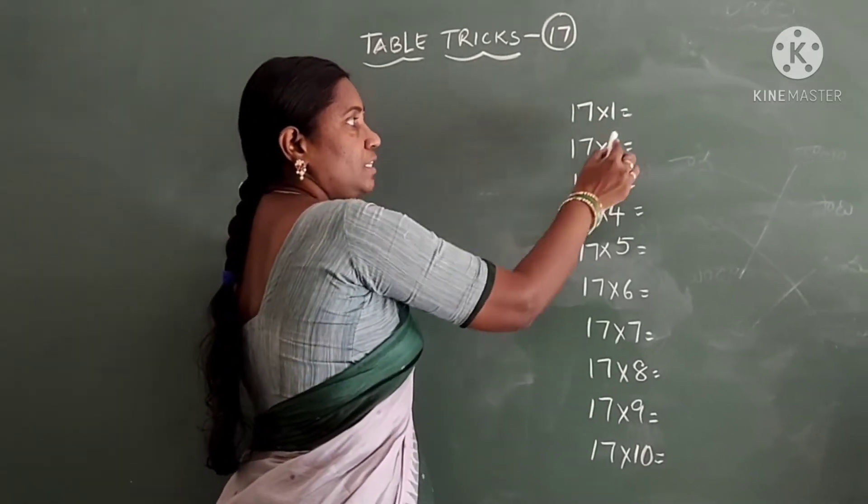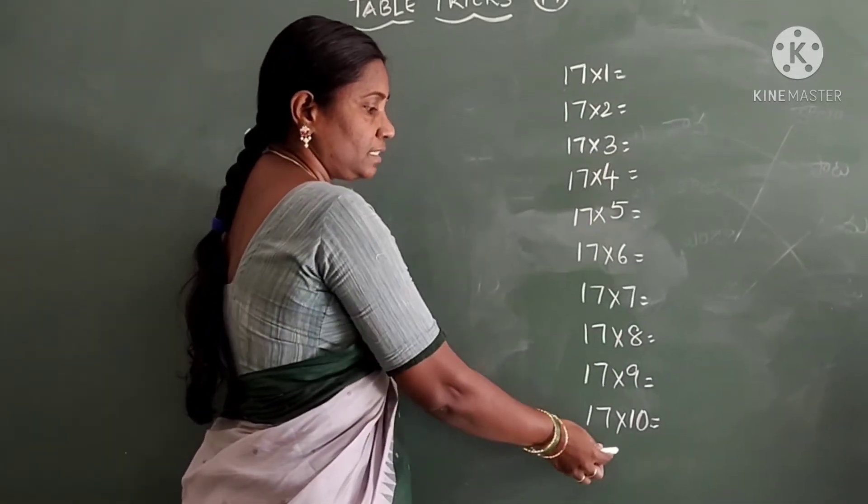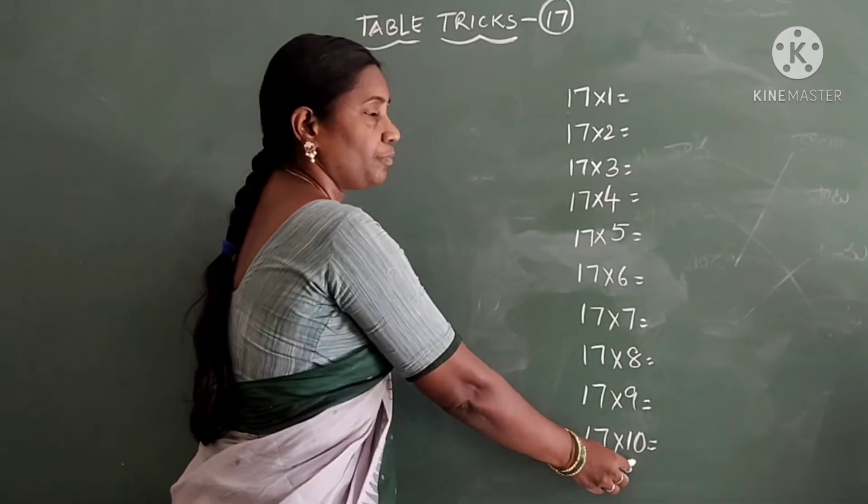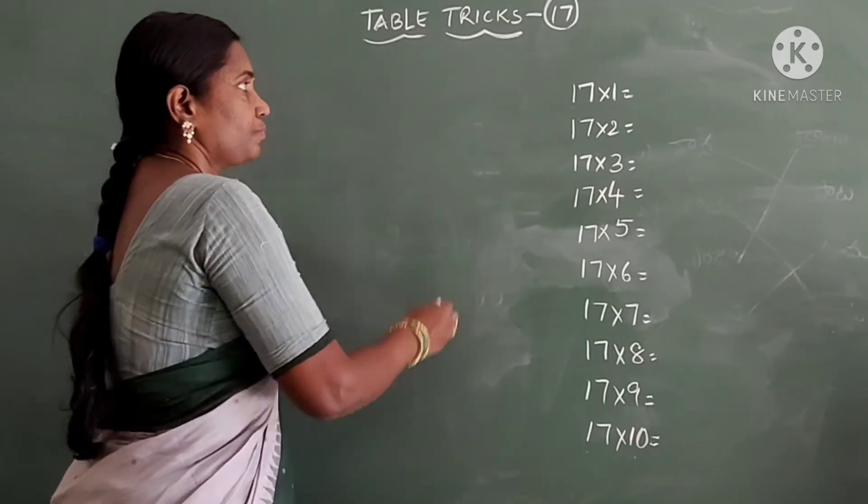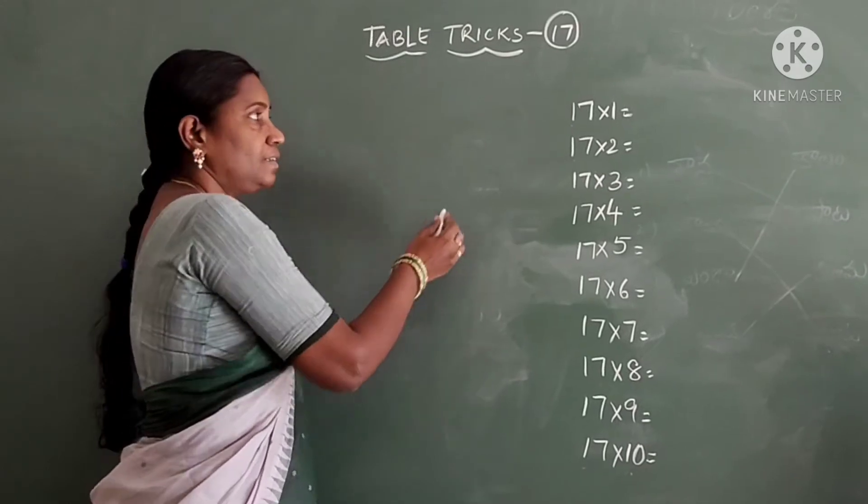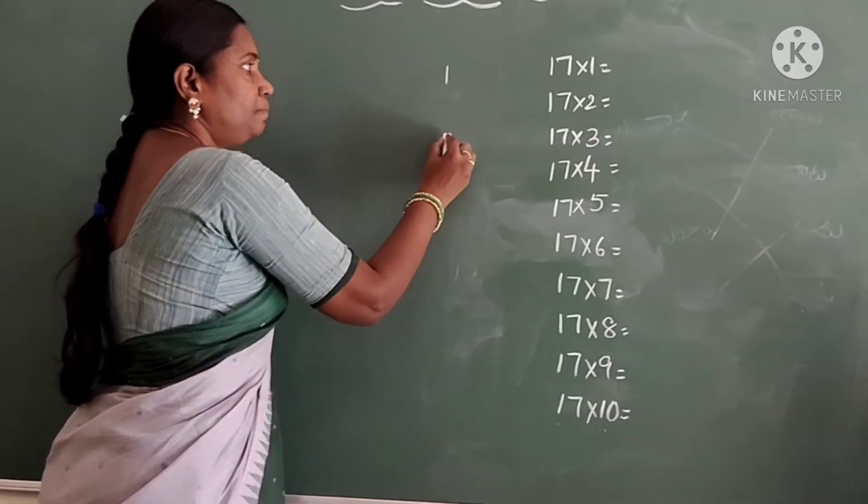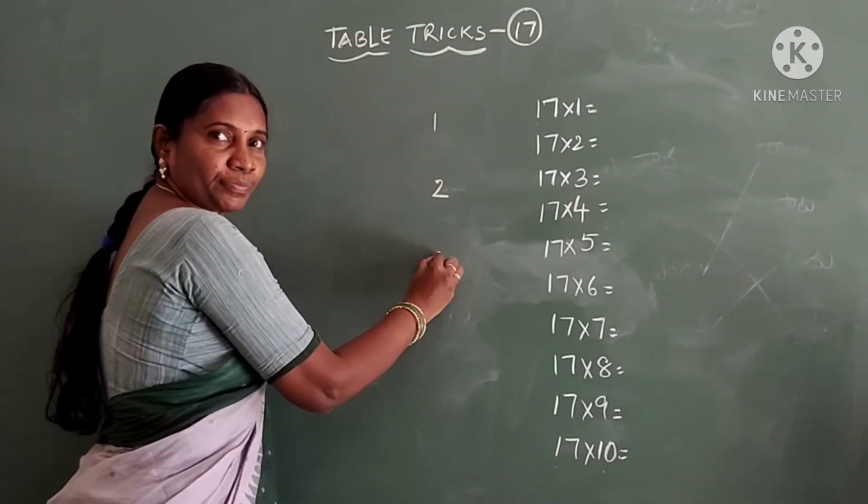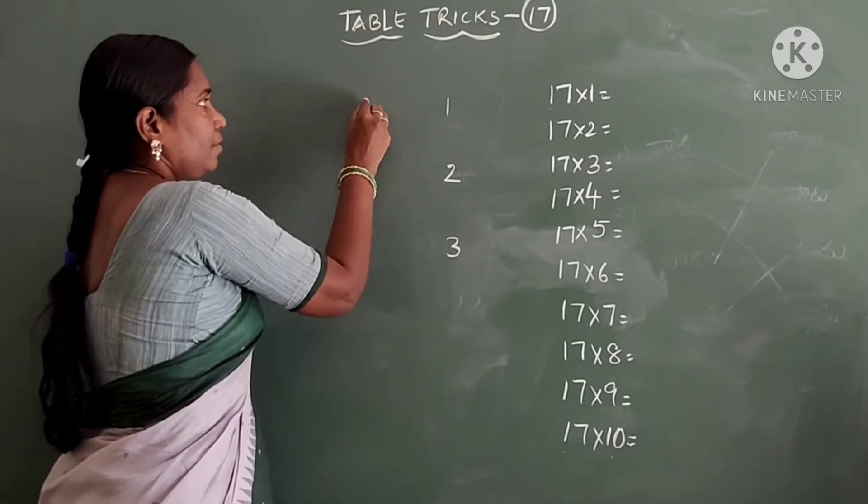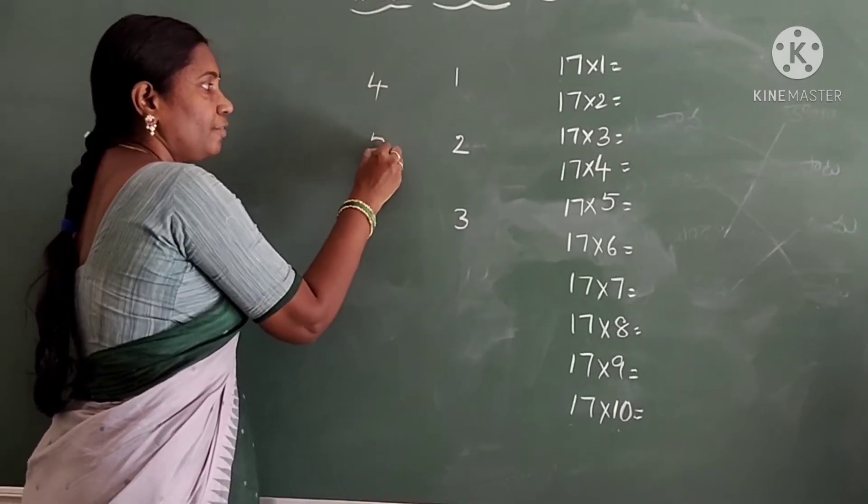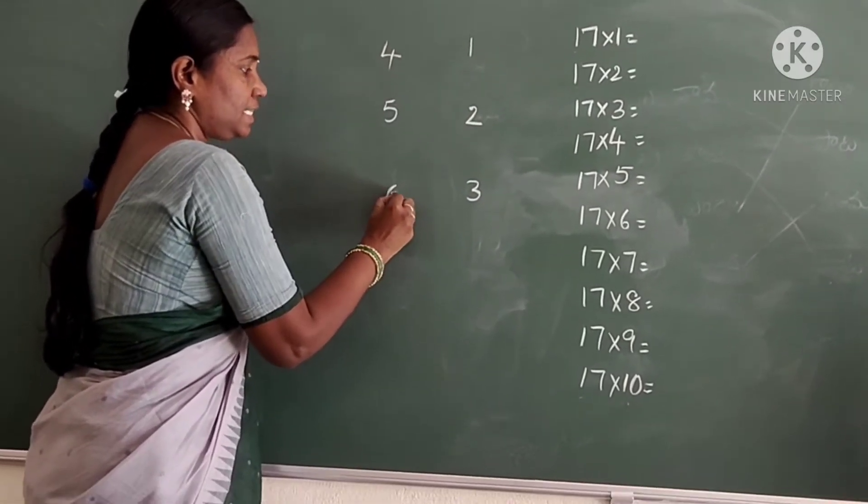This is 17×1 and like this we have to write the table up to 17×10. Let us start. First of all, children write 1, 2, 3, 4, 5,